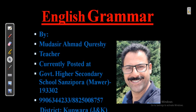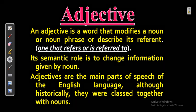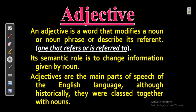What is an adjective? An adjective is a word that modifies a noun or noun phrase, or describes its referent — meaning what we are referring to. Its semantic role is to change information given by the noun. Adjectives are a main part of speech in English, although historically they were classed together with nouns. Adjective gives you the quality of the noun.